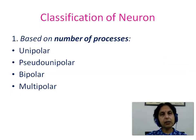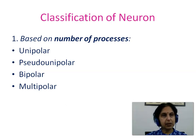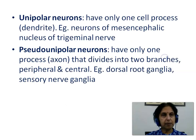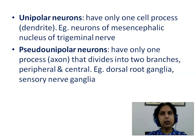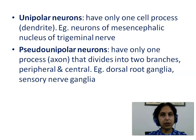Neurons can be classified based on the number of processes into four types: unipolar, pseudo-unipolar, bipolar, and multipolar. Unipolar neurons have only one cell process, which is the dendrite — an example being neurons of the mesencephalic nucleus of the trigeminal nerve. Pseudo-unipolar neurons have only one process, the axon, which then divides into two branches: peripheral and central — examples being dorsal root ganglia and sensory nerve ganglia.